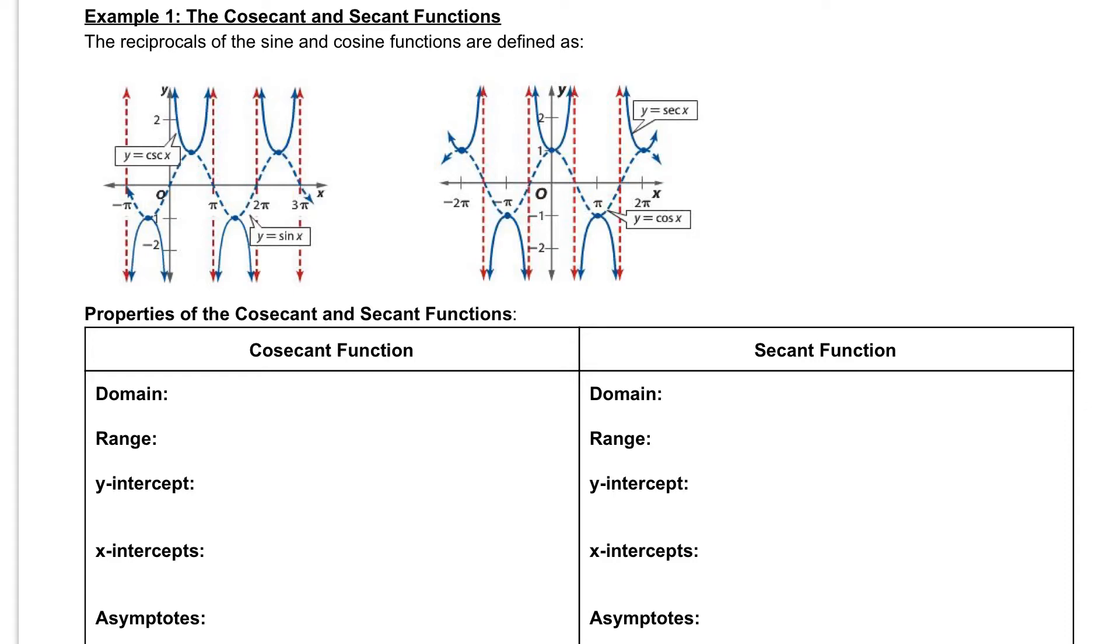In example 1, we are looking at the cosecant and the secant functions. The reciprocals of the sine and cosine functions are defined as follows. Here's our cosecant, which is the reciprocal of the sine.